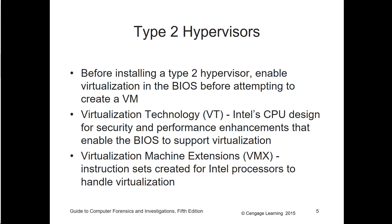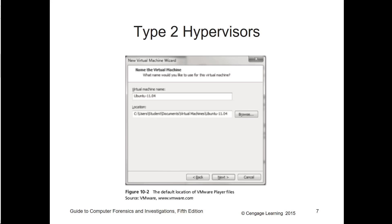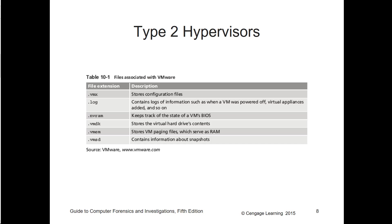With a Type 2 hypervisor you'd be installing it on top of, for example, Windows. You want to make sure your processor supports virtualization — some type of virtualization technology like VT or the VMware extensions — because they help increase the efficiency of virtualization handling. Common ones are Virtual PC, VMware Workstation, and Parallels for Mac. Hypervisors have very specific file extensions; for VMware that includes the VMX file and the VMDK, which is the virtual disk.